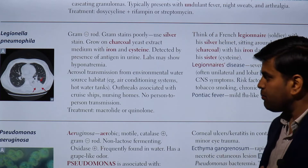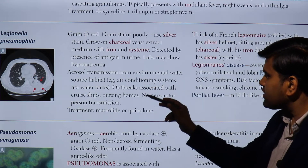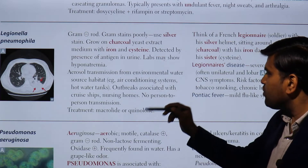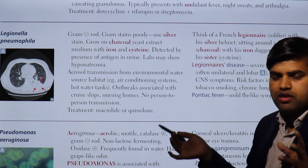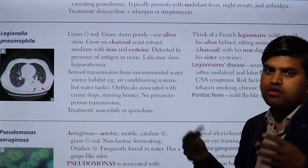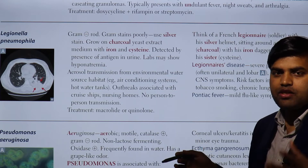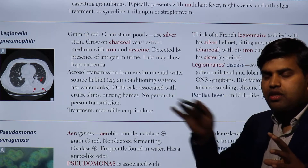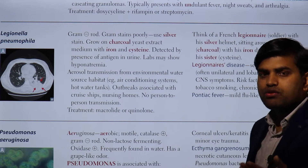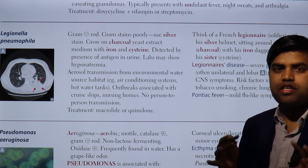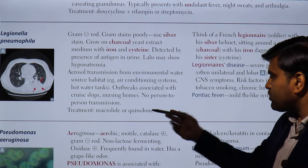Transmission occurs via aerosol from environmental water sources — for example, air conditioning systems, hot water tanks. Outbreaks are associated with cruise ships, nursing homes, and hotels, where a cluster of people get infected from a shared water source. There is no person-to-person transmission, so it is safe to treat patients confidently. Treatment is macrolides or quinolones — azithromycin group or fluoroquinolones.